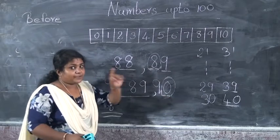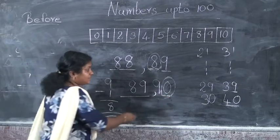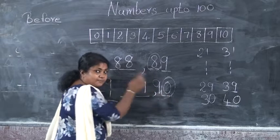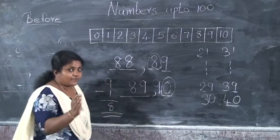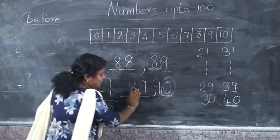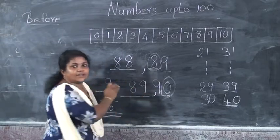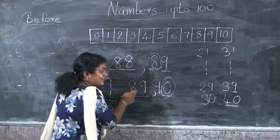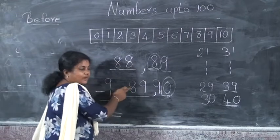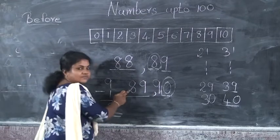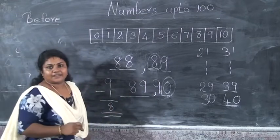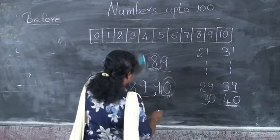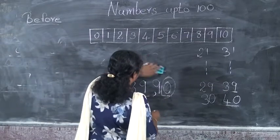While writing before numbers, when 0 comes in the 1s place, we have to write 9 in the 1s place. And minus 1 from the 10s place digit.